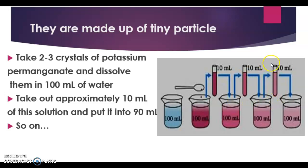We repeat this process — taking 10 ml and adding it to 90 ml of clear water — five to eight times, and the water is still colored. This experiment shows that just a few crystals of potassium permanganate can color a large volume of water (say 1000 ml), meaning there must be millions of tiny particles present in one crystal of potassium permanganate.